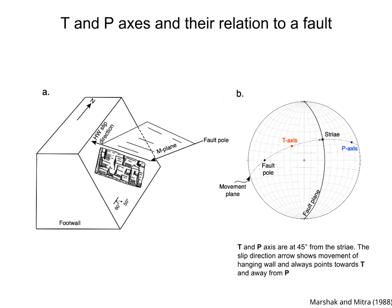In figure B, the fault plane, the striae, and the fault pole are plotted on a stereonet. The fault pole and the striae define the M-plane, which is the dashed great circle in the stereonet. On the movement plane, and 45 degrees from the striae in the slip direction, we plot an axis called the T-axis.